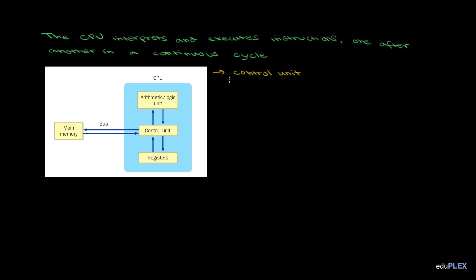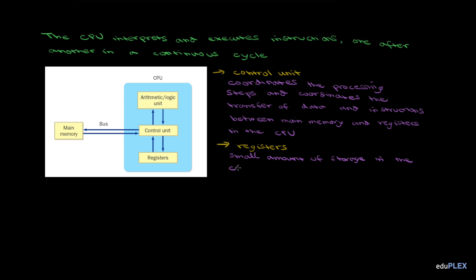The control unit coordinates the processing steps and coordinates the transfer of data and instructions between main memory and the registers in the CPU. The registers provide a small amount of storage space in the CPU itself, so they're basically built-in memory cells that hold operands, memory addresses, and intermediate results.